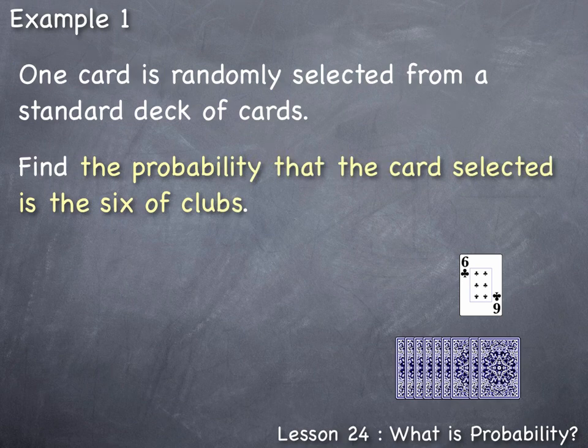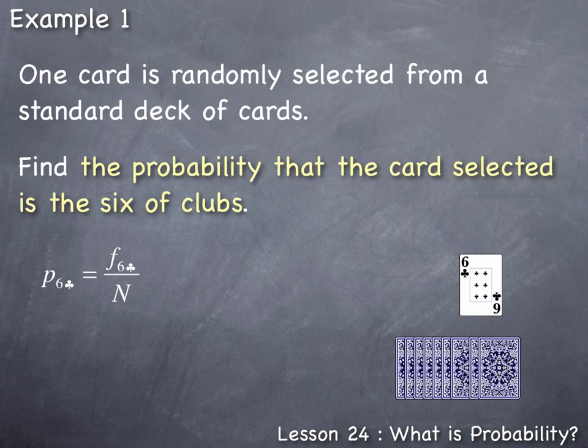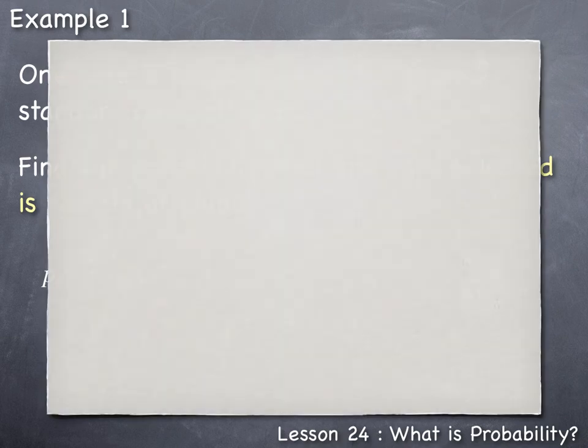Using the relative frequency or proportion approach, we need to be able to count the frequency or number of six of clubs in the deck out of the total number of possible outcomes. The only way we can answer this type of probability question is if we completely understand the composition of a standard deck of cards.